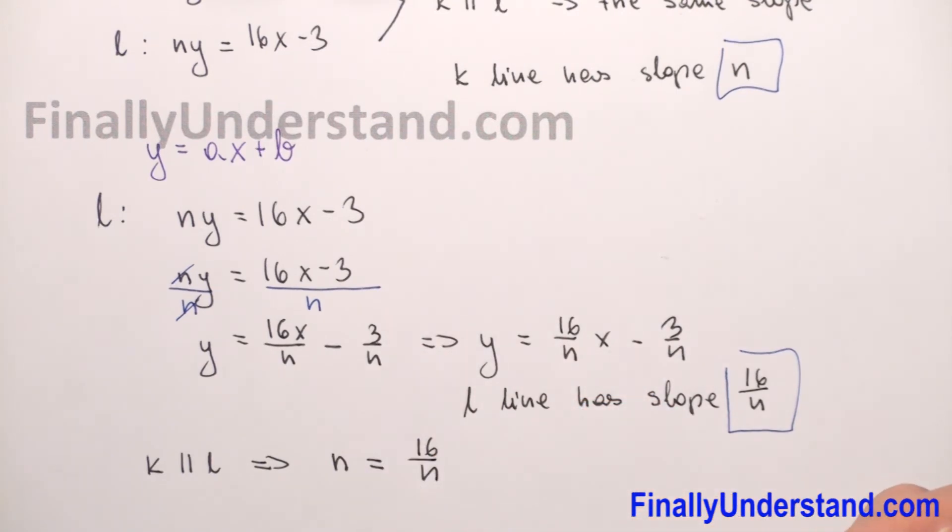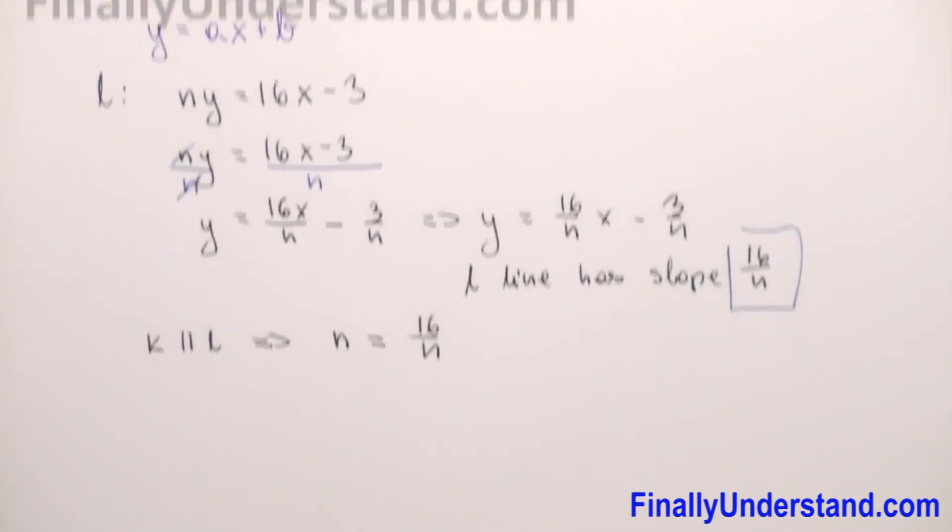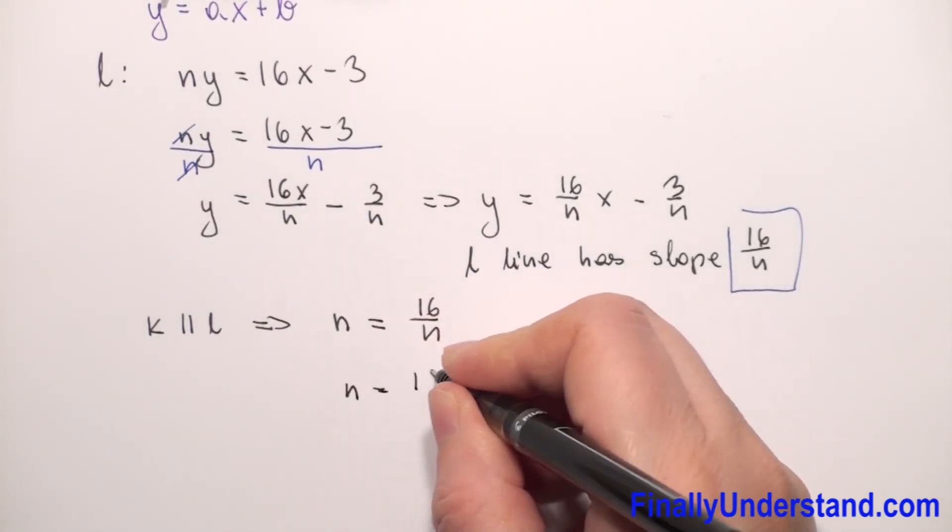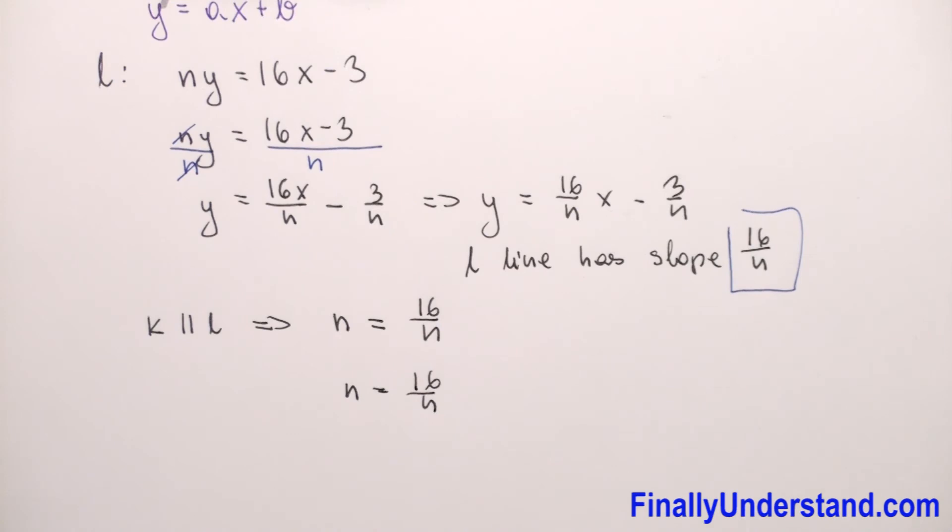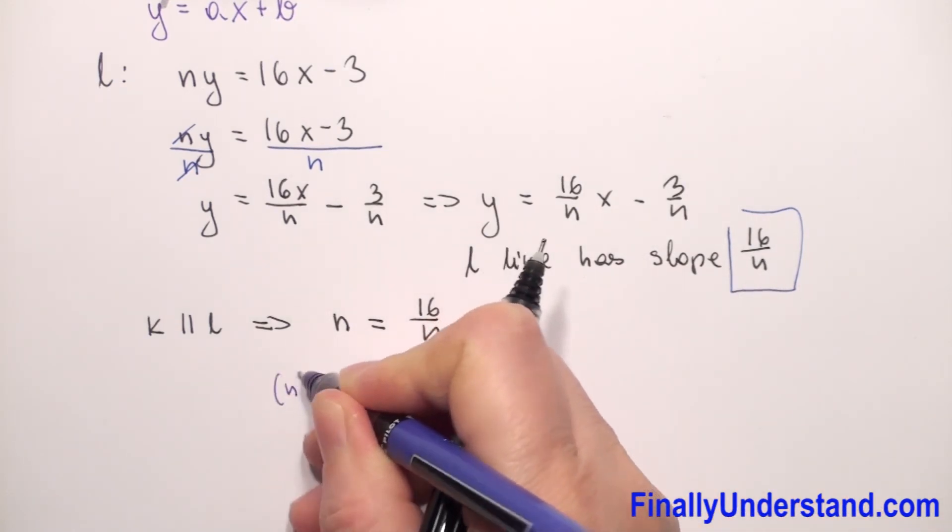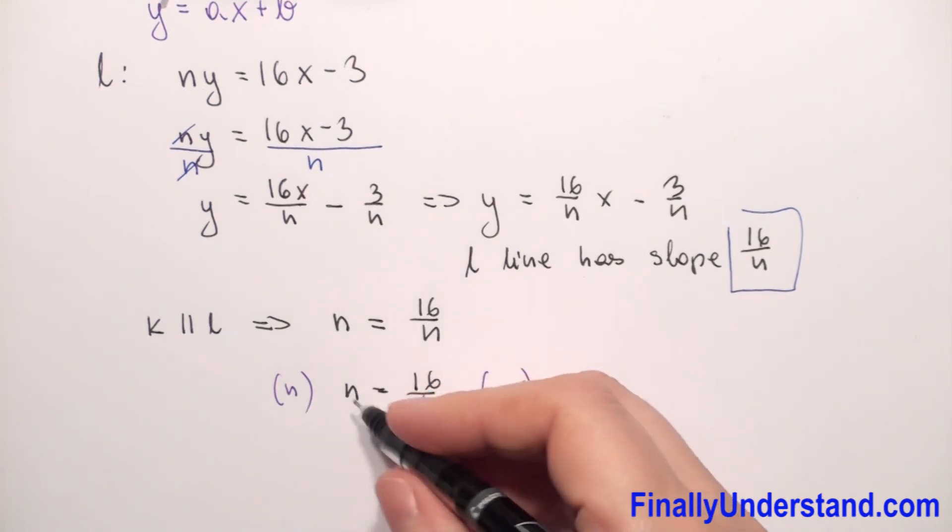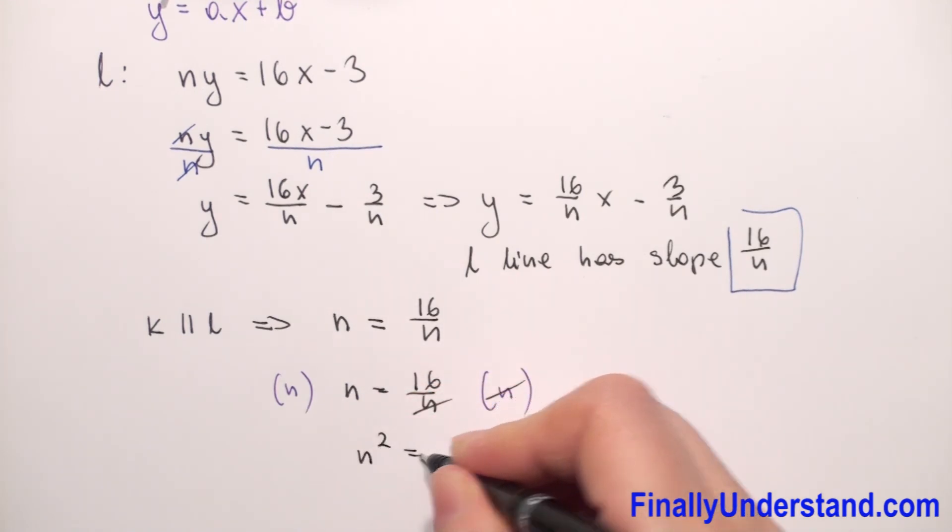So we have an equation with one unknown. Let's solve this equation. I will multiply both sides by n to eliminate the fraction. We have n = 16/n. Multiplying both sides by n gives us n times n equals 16, so n² = 16. Which number raised to the second power gives 16? Positive or negative 4, so n = ±4.